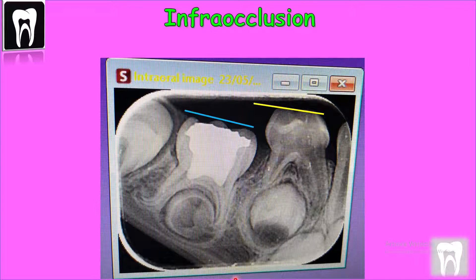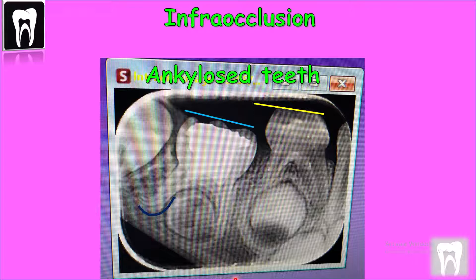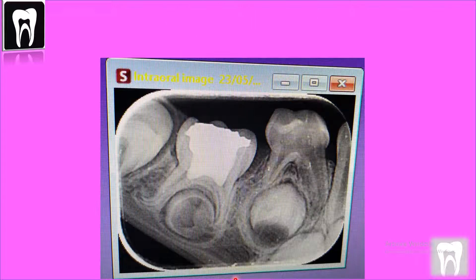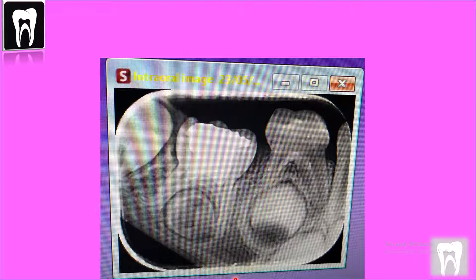Infra-occlusion happens when a tooth is ankylosed — the tooth is stuck where it is, the roots don't have enough space to grow and mature, so they get deviated. The permanent tooth beneath it has no space to stand up properly, so it gets rotated. This is why it is very important to diagnose ankylosis before extracting the primary tooth, to allow enough space for the permanent premolar.